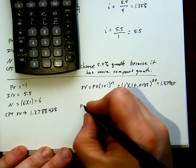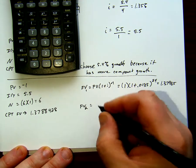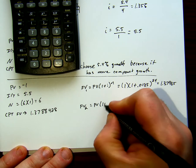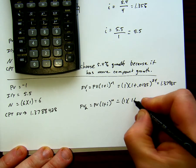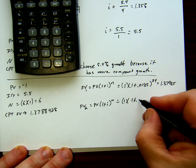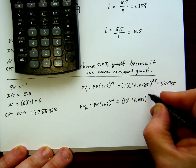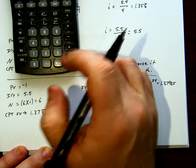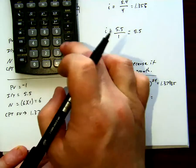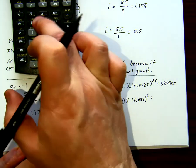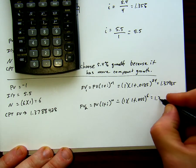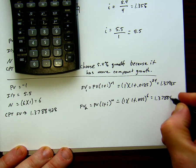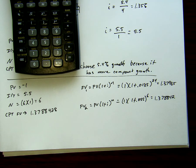And our future value 2 is equal to our present value times 1 plus i to the n, which is 1 times 1 plus 0.055 to the 6. 1 plus 0.055 to the exponent 6, 1.378842. We're doing exactly the same thing as the other calculator modes.